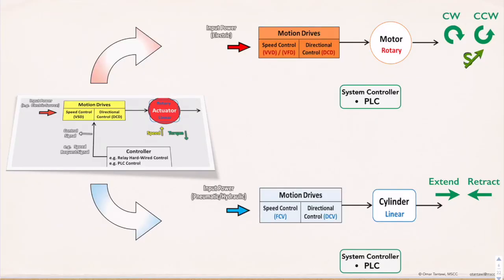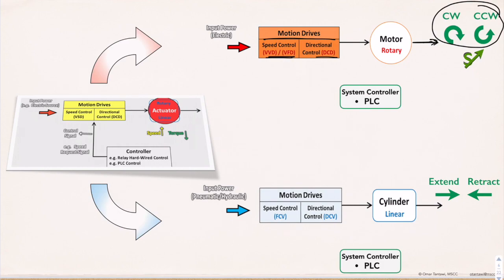Motion drives can have one of two types — a direction control drive or a variable speed drive — connected to the actuator, or can have both depending on the application. These two are called the actuator motion, just right after the actuator block and before the mechanical block. Rotary actuator motion is clockwise or counter-clockwise. Linear actuator motion is extend or retract.